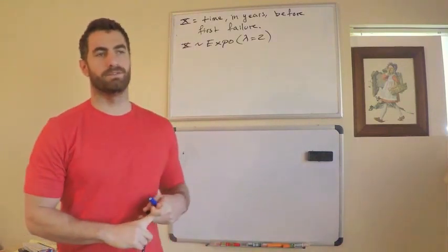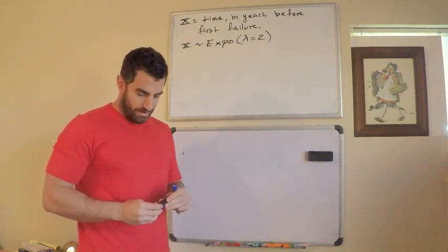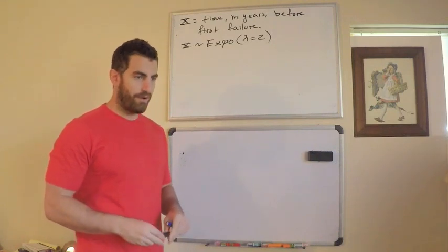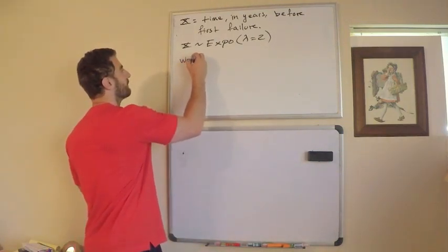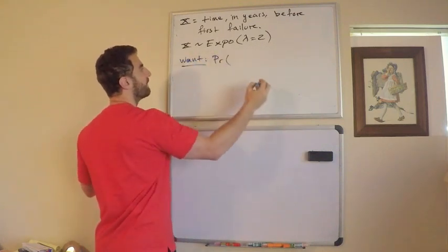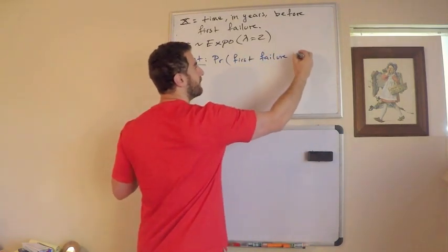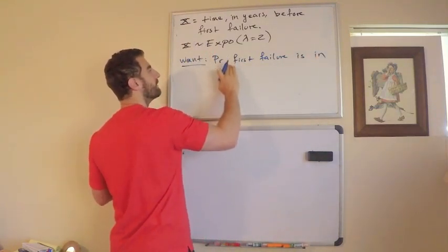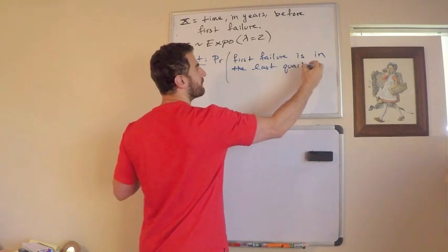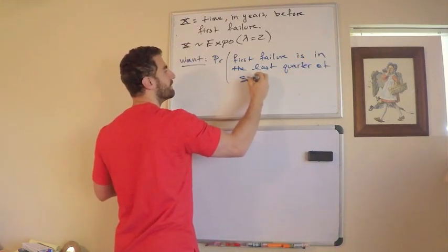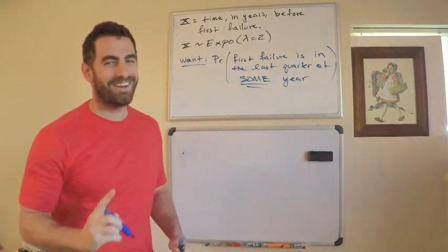So we immediately know the PDF. We immediately know the probability density function. And from here, well, what's the actual question? They ask me, what is the probability that the first failure occurs in the last quarter of some year? So I want the probability that the first failure is in the last quarter of some year. Emphasis on the sum.